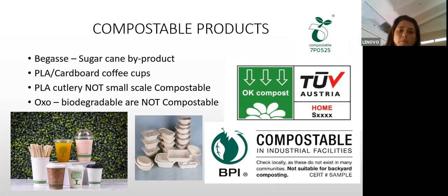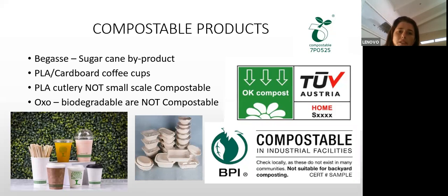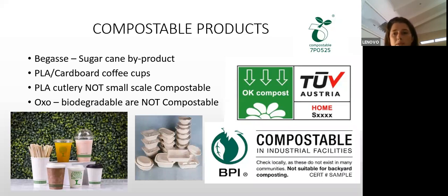Other materials you'll be expected to compost are compostable products. The first is bagasse — a sugarcane byproduct used for plates, bowls, and clamshells for takeaways. These often need to be soaked and shredded before composting as they won't compost if dry. You'll also see PLA-lined coffee cups — PLA is polylactic acid made from cornstarch. Thicker PLA will not compost on a small scale; you need an industrial-scale compost site. Products marked oxo-biodegradable are definitely not compostable — they break plastic into microplastics and will contaminate your compost.